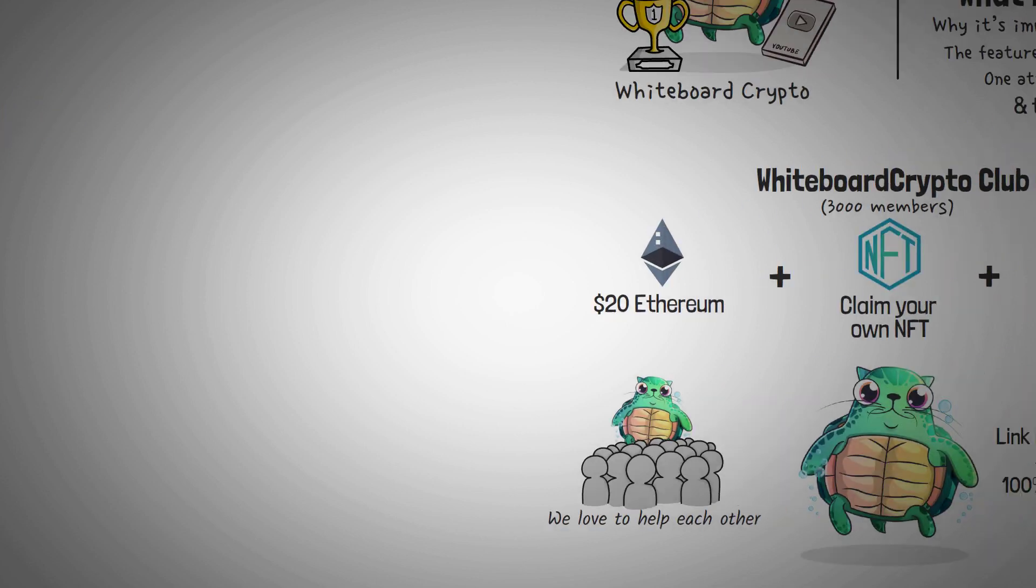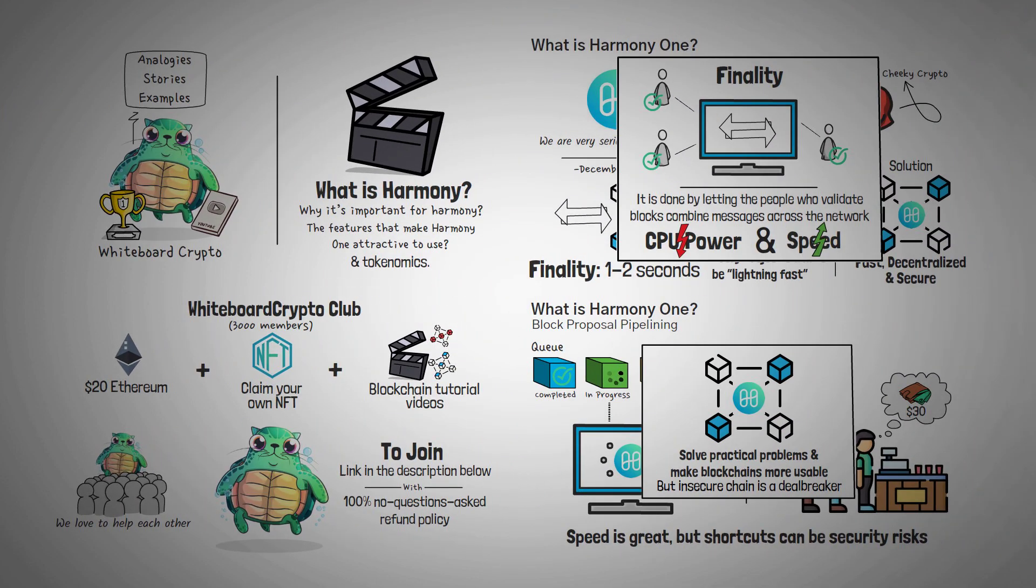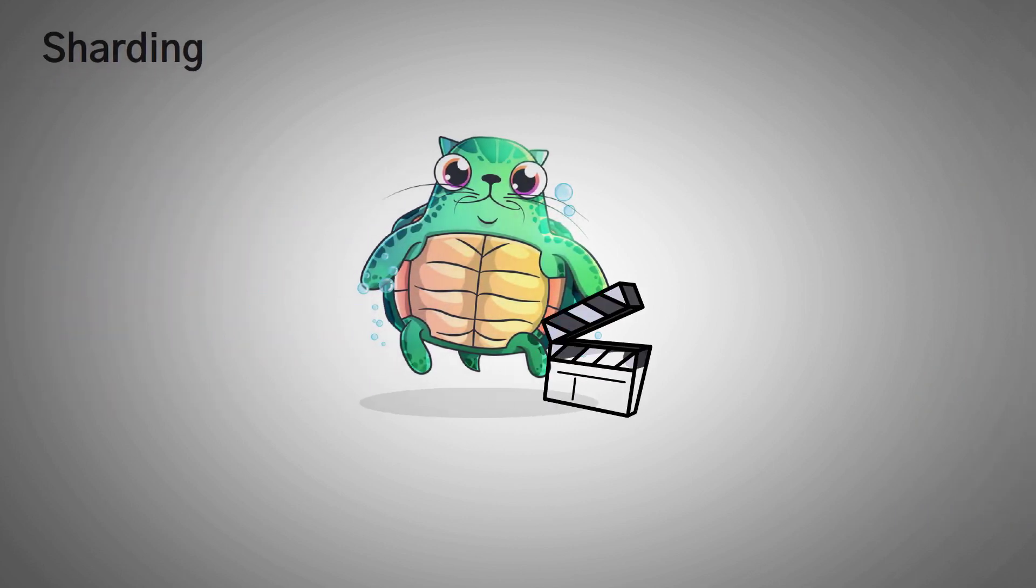Sharding is what actually enables the features that I mentioned earlier. Like many other blockchains, Harmony uses this process for several benefits. To get an in-depth explanation of sharding, you can actually check out our entire video on it.